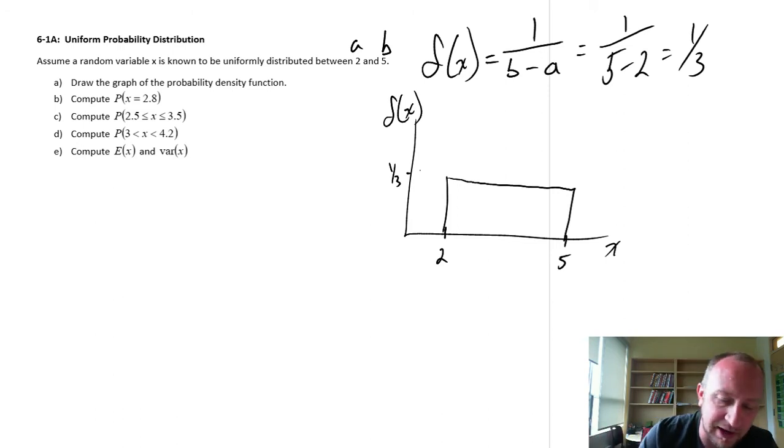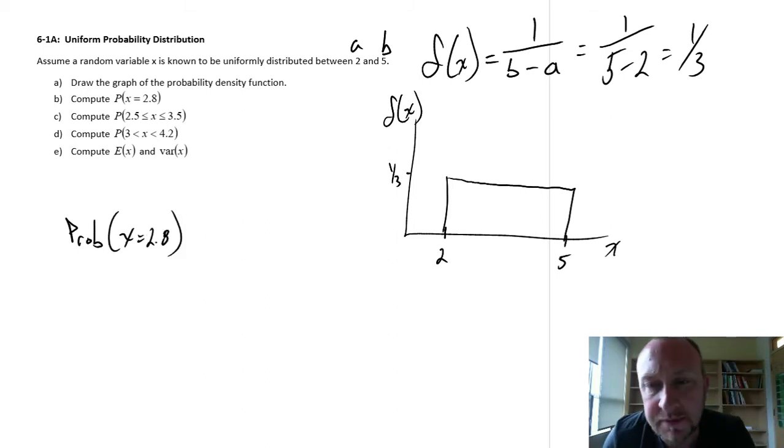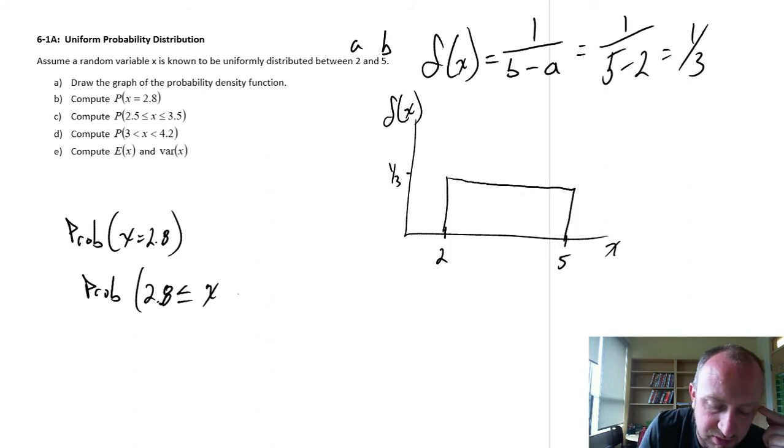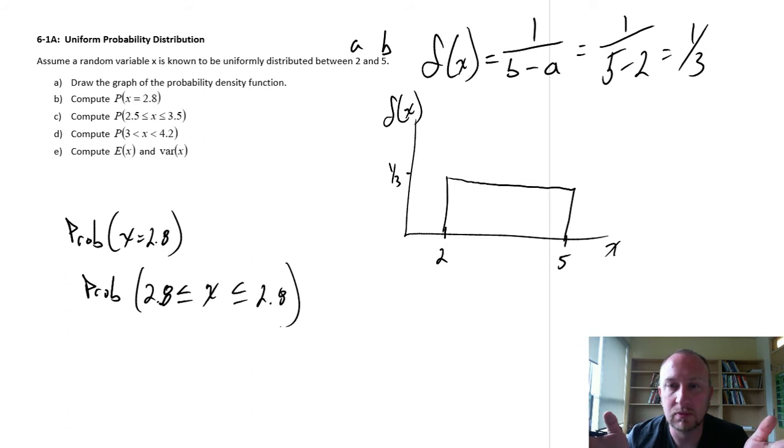The reason for that is if we calculate the probability that x is equal to 2.8, this is the same as saying what's the probability that x is greater than or equal to 2.8 and less than or equal to 2.8. Why? Because it can take on any value to any decimal place, it is entirely continuous.